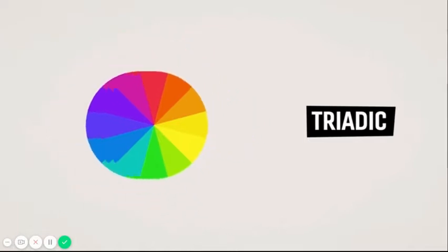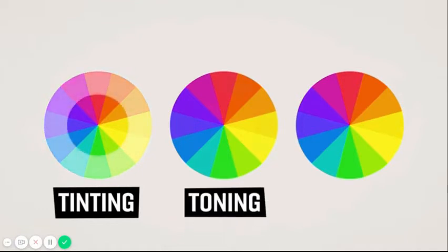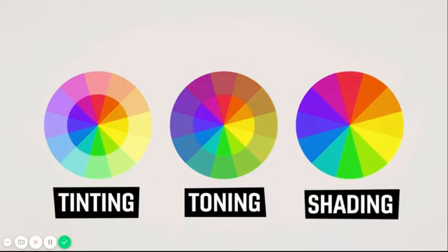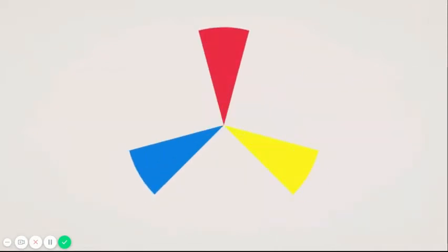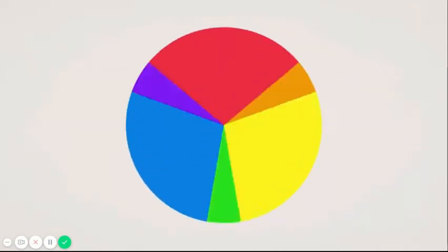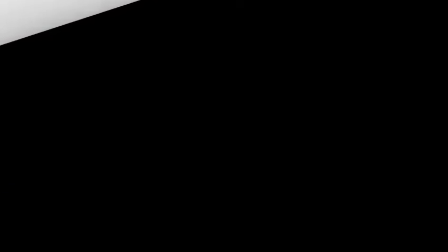Three common color modifications are tinting, which is adding white to a color; toning, which is adding gray to a color; and shading, which is adding black to a color. Lastly, the RYB color wheel is just the starting point for understanding the world of color.